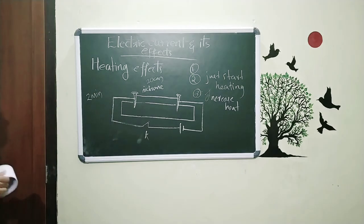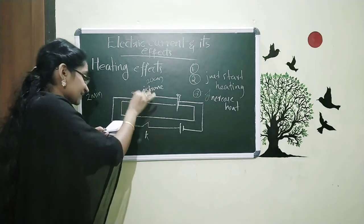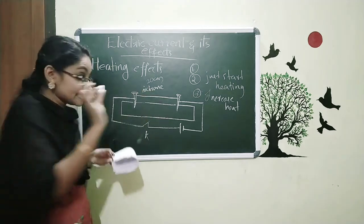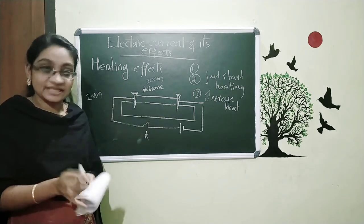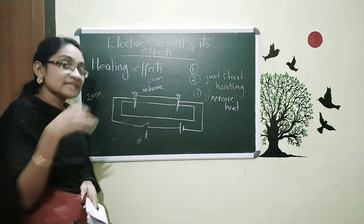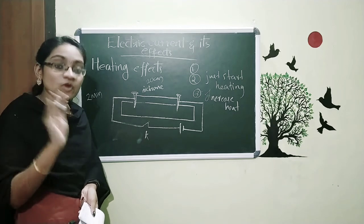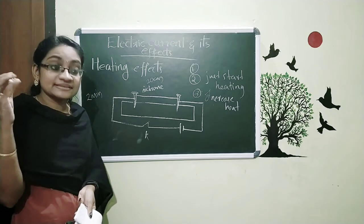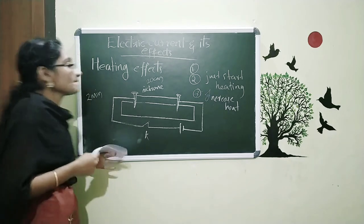So how do we define the heating effect of electric current? The wire gets hot when an electric current passes through it. This effect is called the heating effect of electric current. When electricity flows through certain substances, they produce heat. The amount of heat depends upon the material — in some metals the heat produced is less, and in others it is high.